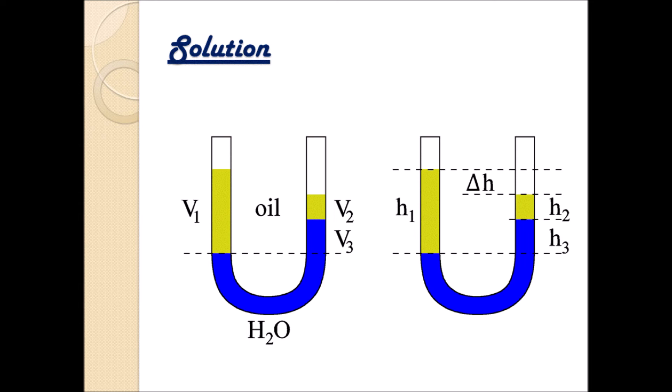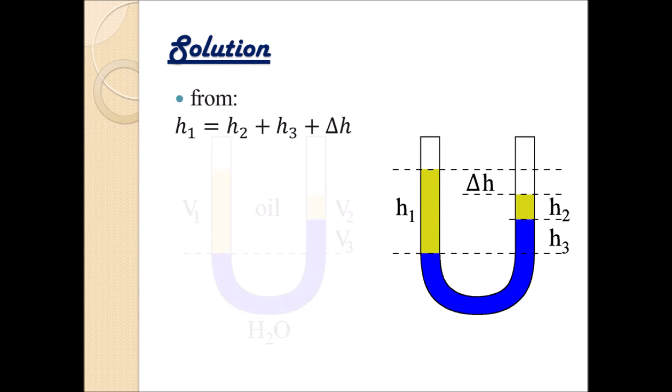So basically, we can write down the height on the left-hand side h1 equals height h2 plus h3 plus delta h. And we wanted to know something about the water on the right-hand side, right? So let's rewrite this equation: h3 equals h1 minus h2 minus delta h.